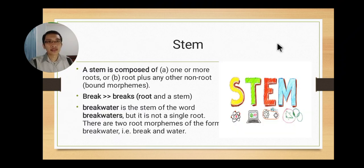What is stem then? Stem is composed of one or more roots. It can be combinations of roots. A stem can be root plus any other non-root or bound morpheme. We will discuss about bound morpheme in the next presentations. We have an example like brick and bricks.